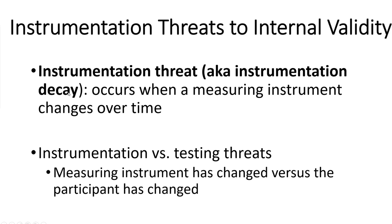Instrumentation and testing threats seem on the surface to be rather similar, but we can differentiate between them by thinking about what has changed. For the instrumentation effect, it's the measuring instrument itself that changes between your pre-test and post-test. For testing threats, it's actually the participant themselves who have changed — either they've improved in ability or reduced their ability due to fatigue. Focusing on what exactly is causing this difference — whether it's the instrument or the participant — helps you piece apart whether it's an instrumentation or testing threat.